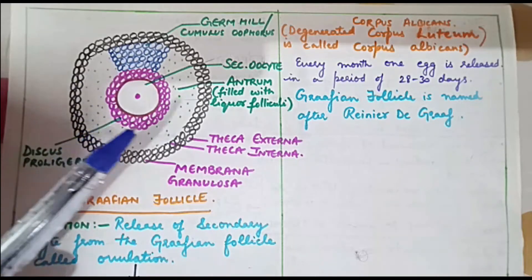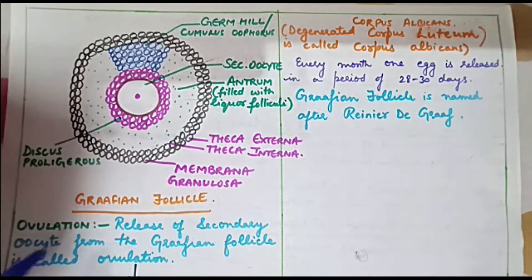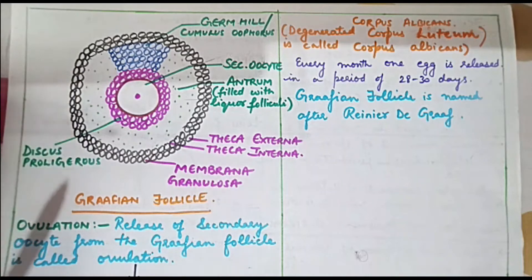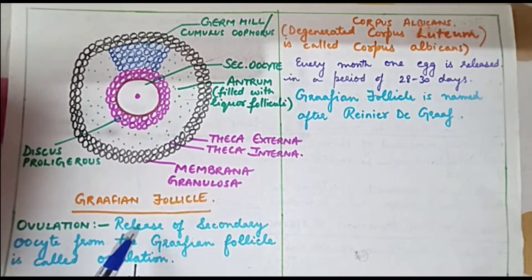This is all about the structure of Graafian follicle and now we must define what is ovulation. Ovulation means release of secondary oocyte from the Graafian follicle.